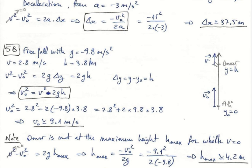Now, when the ball reached Omar, it still had velocity. We can also calculate the distance or maximum height when the speed reaches zero and reverses direction, meaning it starts to fall. So Omar is not at the maximum height H_max for which V = 0. If we now use the same equation for maximum height, it will certainly be greater than 3.8 meters, as we expect.